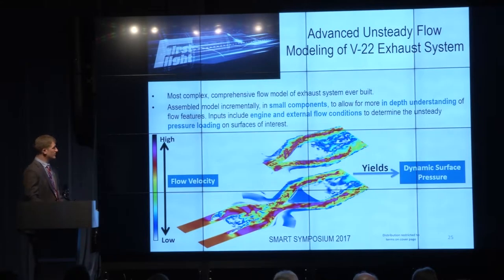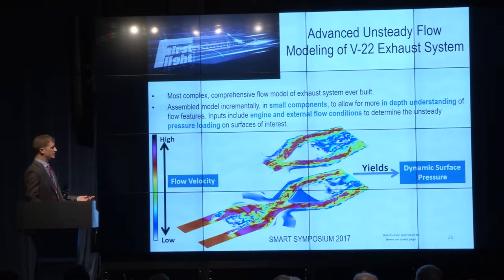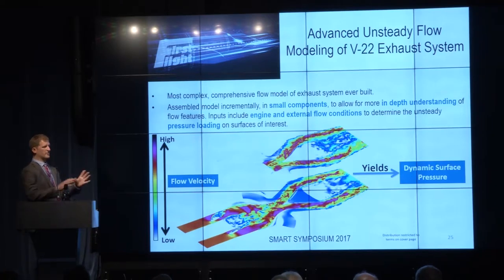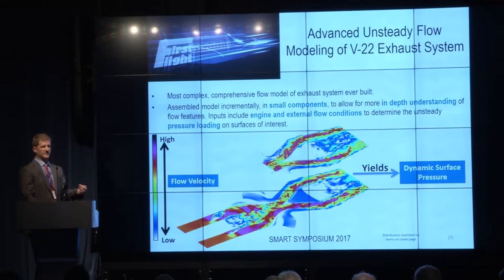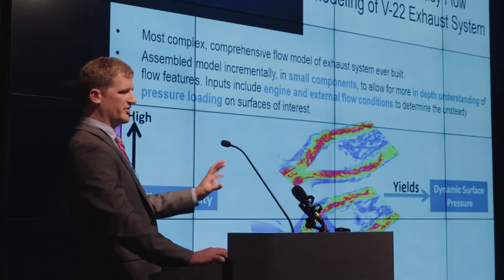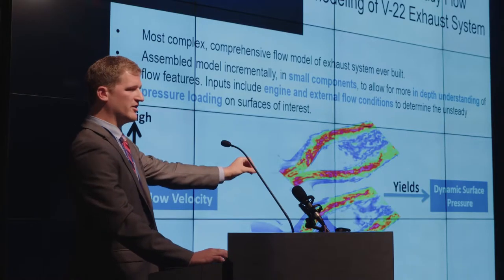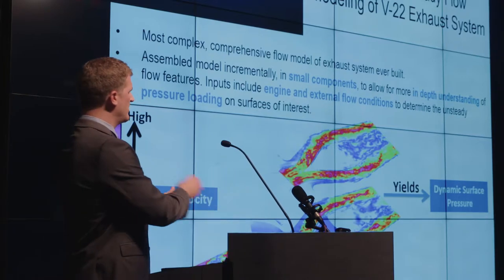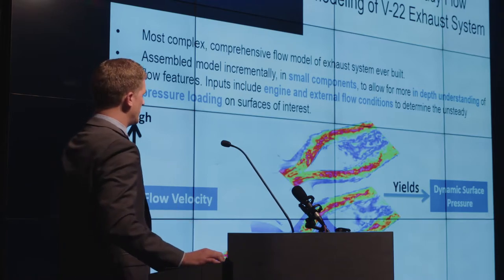To date, this is the most complex, comprehensive model of the V-22 exhaust system that has ever been built. We took a building block approach, assembling it incrementally piece by piece. There are 20 to 40 different components in the exhaust system. By assembling it piece by piece, you have a better understanding of how each component affects what we're looking at. If you start with the full thing and have an issue, you have no idea where it's coming from, but if you add it piece by piece you can see when that comes up.